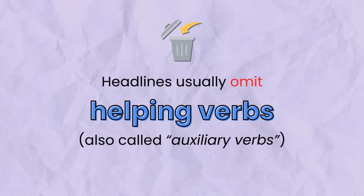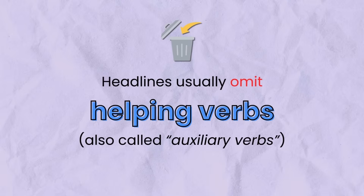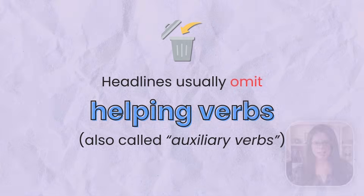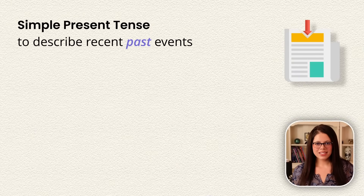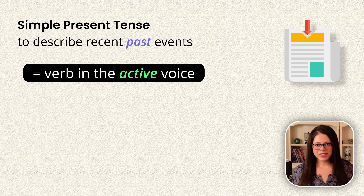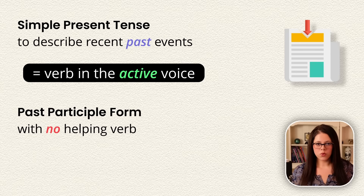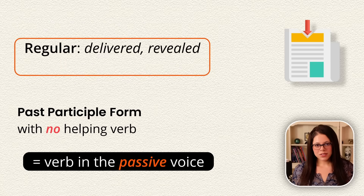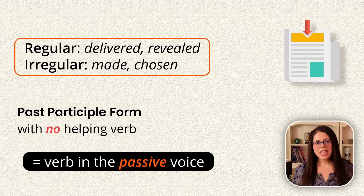Tip number four: headlines usually omit helping verbs, also called auxiliary verbs. This includes verbs like 'be,' 'have,' and modal verbs like 'can' or 'should.' If you see the past participle form of a verb with no helping verb, then it's probably a verb in the passive voice. This can be a regular past participle like 'delivered' or 'revealed,' or it can be irregular, like 'made' and 'chosen.'